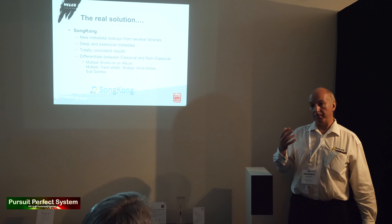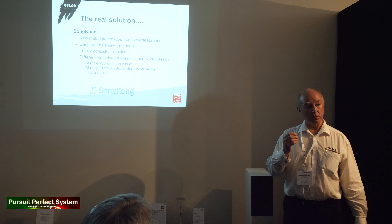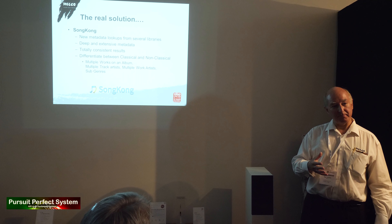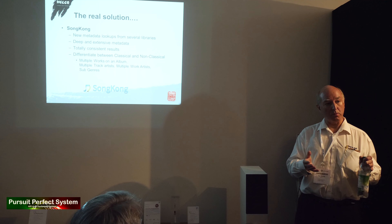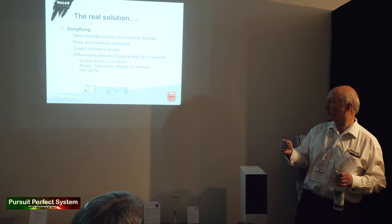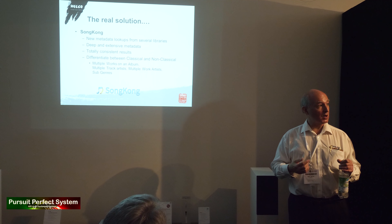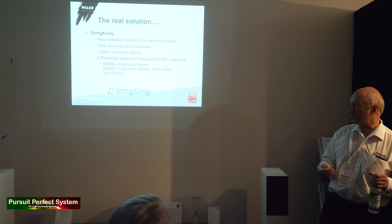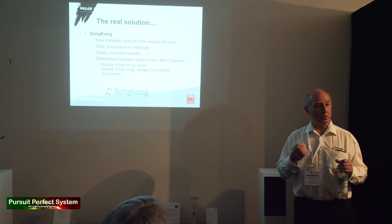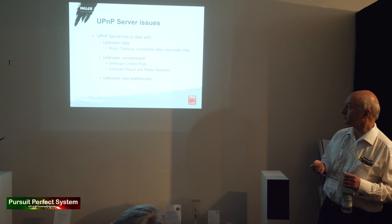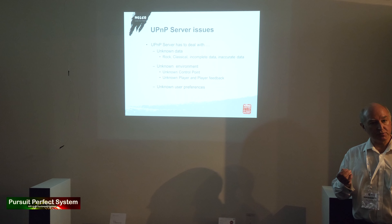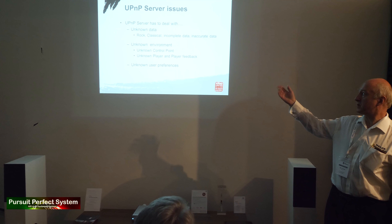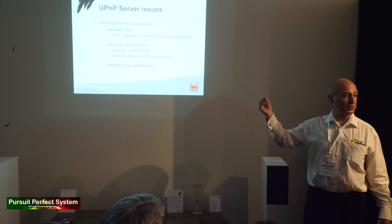We can deal with things like a typical classical situation where you've got multiple pieces of music and multiple works on one album. We've got multiple track artists — very common with jazz — lots of stars attributed to an individual track, multiple work artists, sub-genres. It all gets very complicated. And Songkong consistently applies rules to fix it. Going back to the UPnP server — which is the interface between this metadata that Songkong has and the user — there are variables and problems to be dealt with. The UPnP server has no idea what the original data is supposed to be: it doesn't understand whether it's classical or incomplete. It's working in an unknown environment and doesn't know what control point you're using.